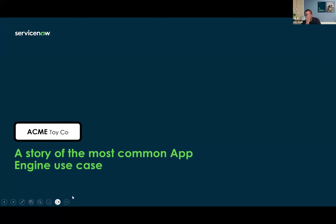Let's transition to a story around Acme Toy Company. This is an analogy of the primary applications of App Engine and some of the side effects of not using App Engine in this scenario. One thing to reiterate is we always want to be a good citizen on the platform. Even though we're talking about App Engine specifically, we want to open up the aperture and look at how we can utilize all of the core capabilities and existing products. We are not encouraging people to build custom applications when they're not needed.